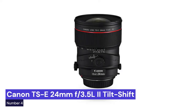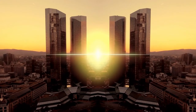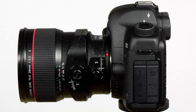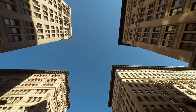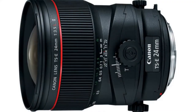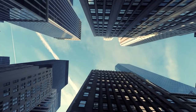Our fourth choice is the Canon TS-E 24mm F3.5 L II tilt-shift lens, a high-quality lens that offers a wide range of features for photographers. It is a versatile lens that can be used for a variety of photography genres, including landscape, architecture, and product photography. The lens is constructed with high-quality materials and includes advanced features such as an ultra-low dispersion element and a sub-wavelength coating.